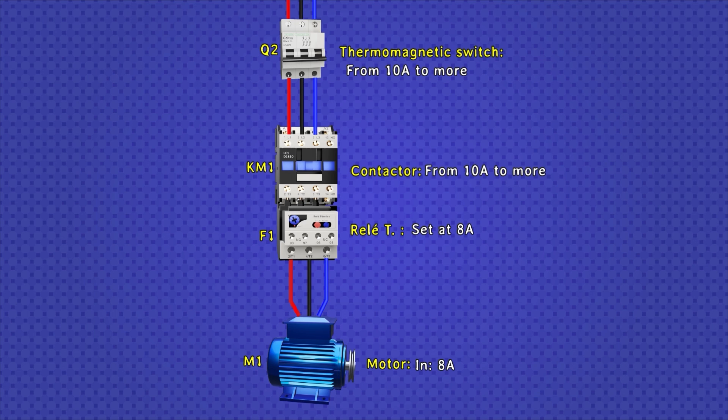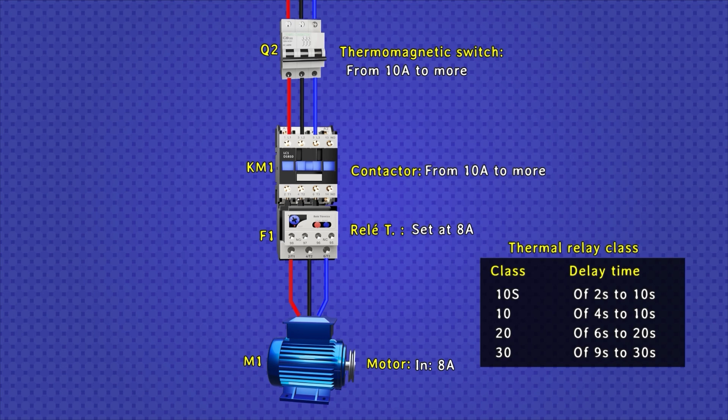Furthermore, even if the motor is changed, it can be operated with the same relay, just adjust its trip current intensity, and that's it. While the thermomagnetic one cannot, since these come with values established according to the standard, which can be 10, 16, 20, 25 amps, etc.